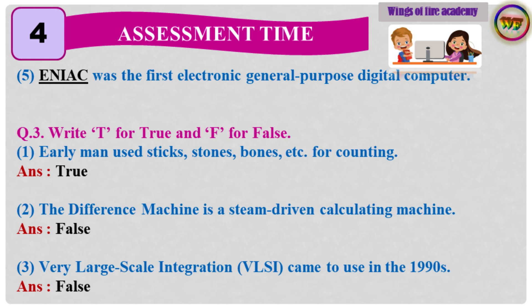Question number 3: Write T for True and F for False. 1. Early man used sticks, stones, bones, etc. for counting. Answer: True. 2. The difference machine is a steam-driven calculating machine. Answer: False. 3. Very large-scale integration came to use in the 1990s. Answer: False.